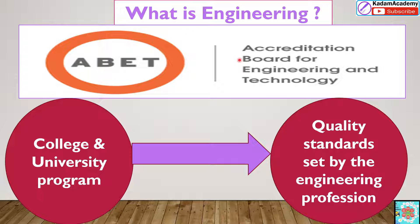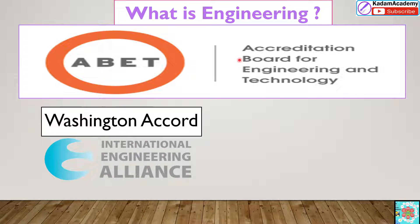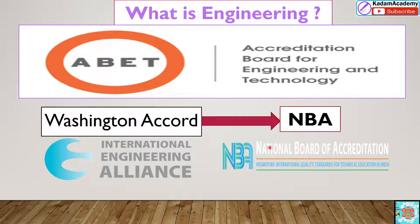ABET is an international body that decides and sets all these standards. In the US, various universities and colleges are under ABET. In India, the Washington Accord is followed — specifically, the NBA, National Board of Accreditation, follows whatever standards and procedures are decided by the Washington Accord. The purpose is to set the quality standards of the program for the engineering profession.